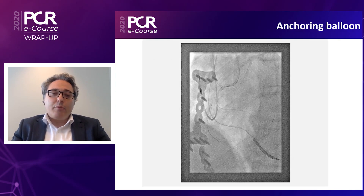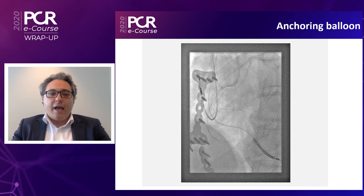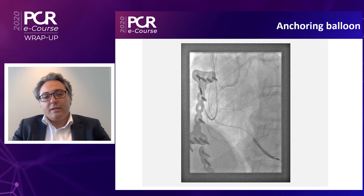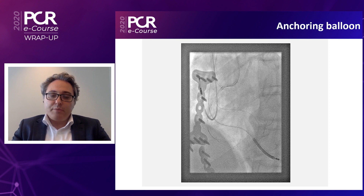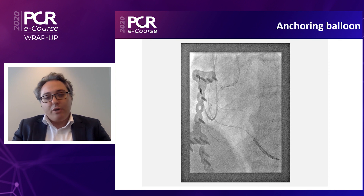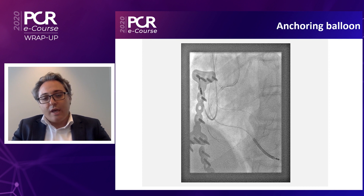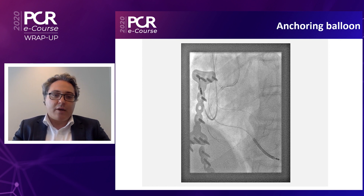Another problem at this stage was that the vessel was very calcified and tortuous, making it difficult to advance the microcatheter up to the guiding catheter. So we had to perform an anchoring balloon technique. Normally we perform this technique by trapping the wire in the guiding catheter, but here that was not possible because it was an ipsilateral collateral and we would have trapped the microcatheter too. So we did an intra-vessel anchoring balloon — trapping the wire intra-vessel — and thanks to this increased support, we were able to advance the microcatheter.